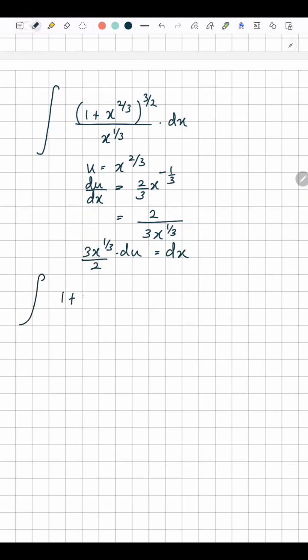You go back into your question: 1 plus u to the power 3 over 2, over x to the power 1 over 3. Instead of dx, I'm going to write 3 over 2 times x to the power 1 over 3 dot du.